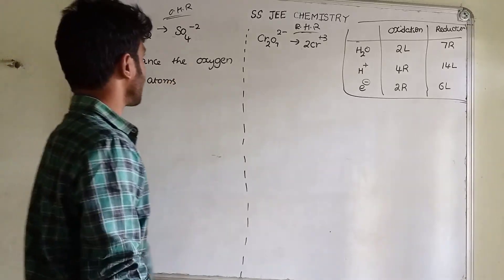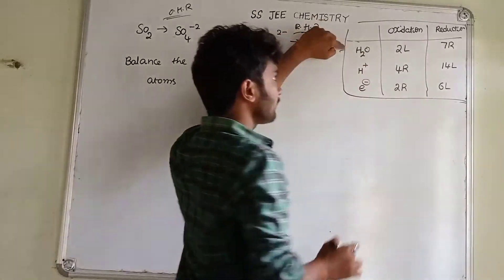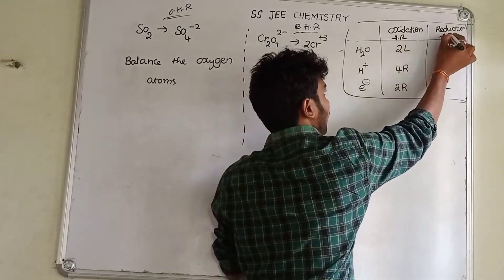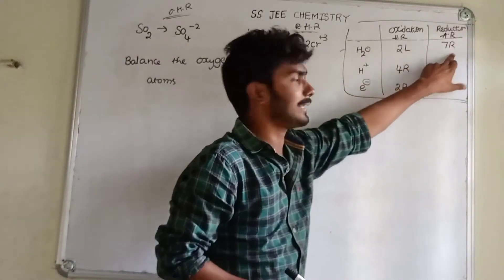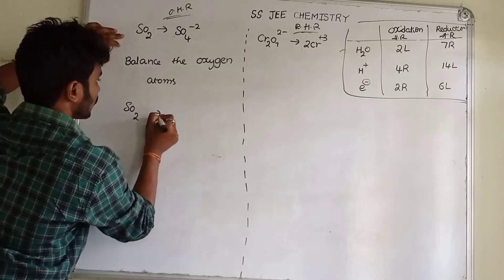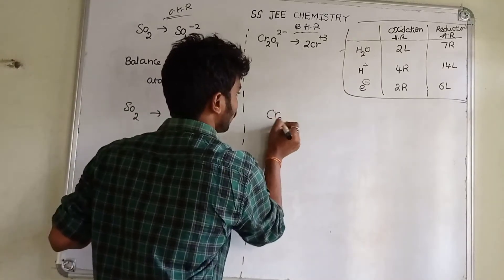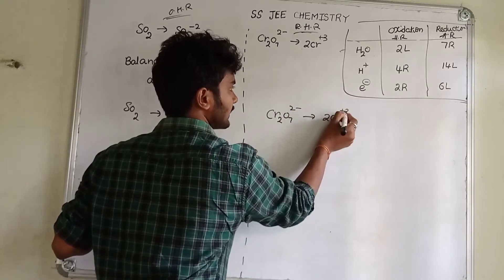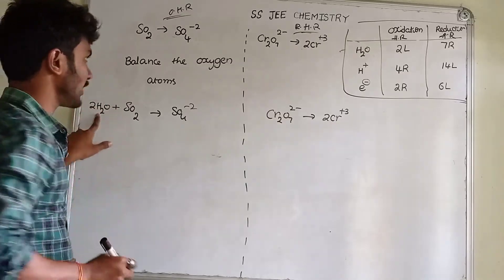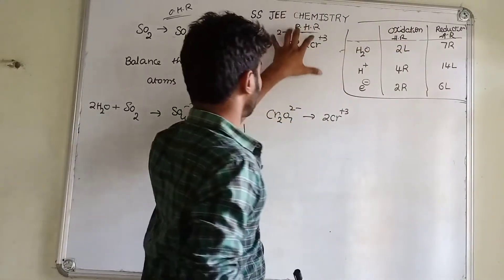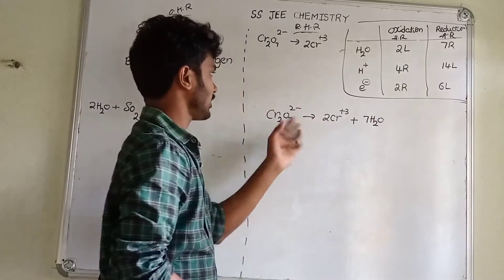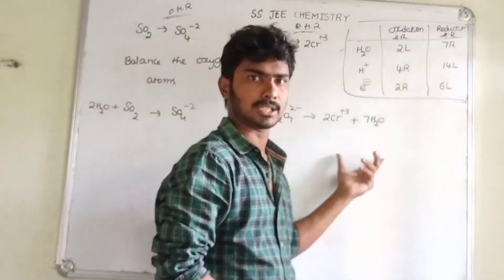Now, oxygen atoms — the table is starting. Oxidation H2O: oxidation half-reaction left side — add 2H2O to the left side. So SO2 gives rise to SO4²⁻, and we have 2H2O on the left side. Next, reduction half-reaction right side — add 7H2O to the right side. So 7H2O is added to the reduction half-reaction right side.